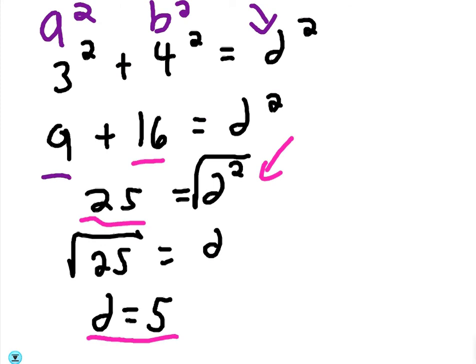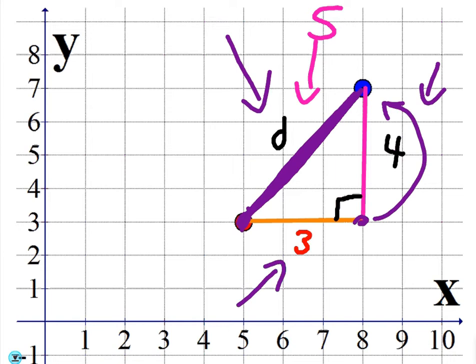We're going to use that concept of the Pythagorean Theorem to figure out the distance formula. I'll probably let you use it on a quiz because the distance formula is a little more intricate, more involved, and harder to remember than the midpoint formula — X1 plus X2 over 2, Y1 plus Y2 over 2. Especially since in this class we haven't gone over the Pythagorean Theorem yet.